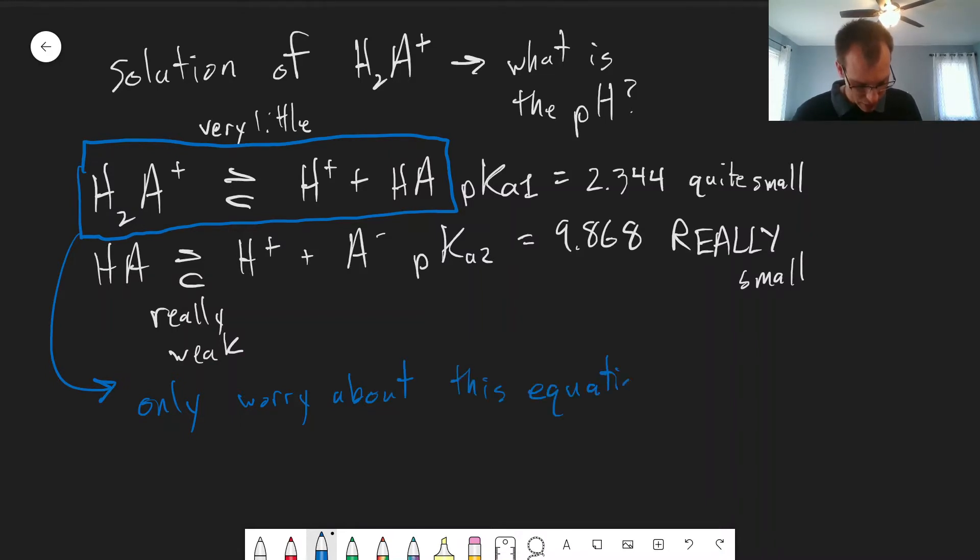We can use the second equation to figure out roughly how much A minus we have, and we'll do that. But if we have a completely protonated species, we can treat it just like we would a regular weak acid equilibrium for monoprotic species.